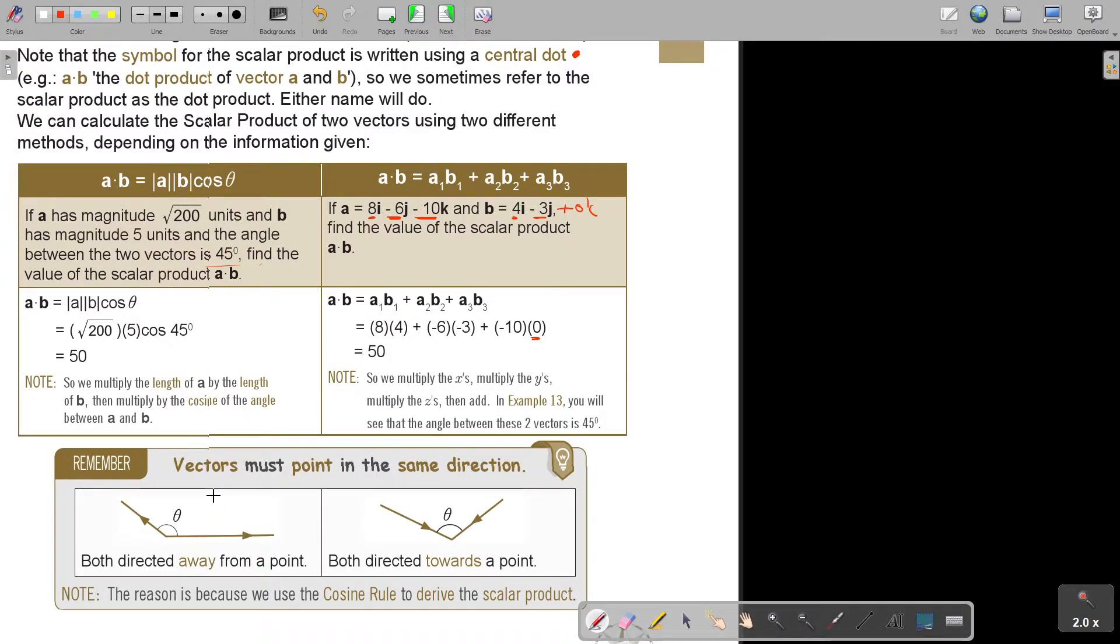Vectors must point in the same direction. Both directions are ways. Because the order is very important. So, it must both go out, or both go in, towards a point. The reason is because we use the cosine rule to derive the scalar product.